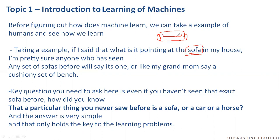But if you put it in front of someone who has never seen a sofa in their life before, they might not be able to tell it. That's what distinguishes between these two — people who haven't seen any sofas before will not be able to identify it. That's something we take for granted: if you haven't learned something, you don't know it.